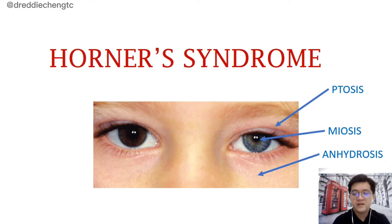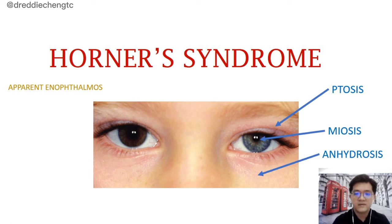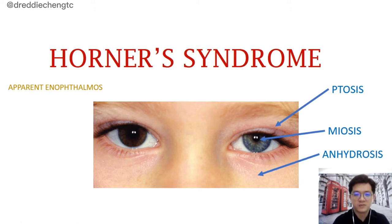Other than this classical triad, we also have other clinical signs which include apparent enophthalmos, because of the ptosis over the upper eyelid as well as the inverse ptosis over the lower eyelid. The lower eyelid is controlled by the inferior tarsal muscles, which is supplied by the sympathetic plexus. Because of this ptosis, it gives the patient an apparent enophthalmos.